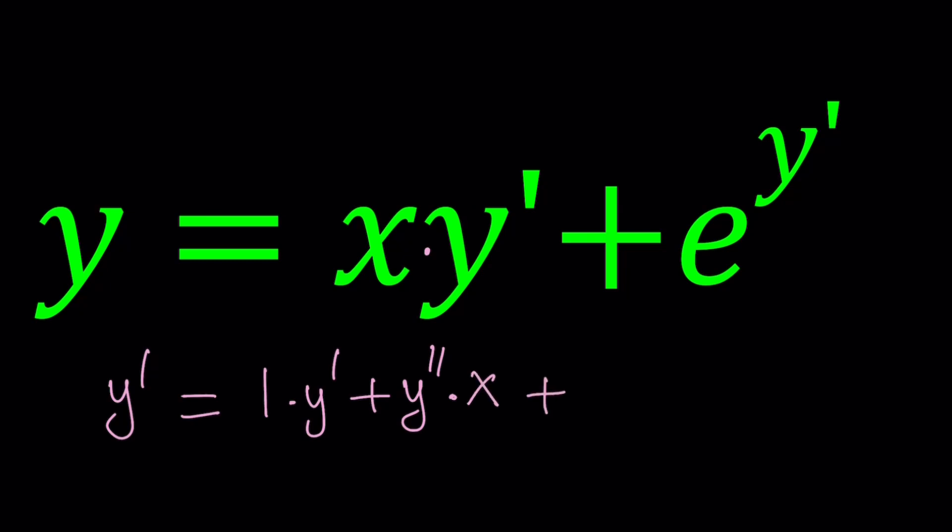Plus, when you have e to the power of a function, how do you differentiate it? By chain rule. Remember, you differentiate it. When you differentiate it, it becomes the same thing times the derivative of the inside, which is the chain rule.